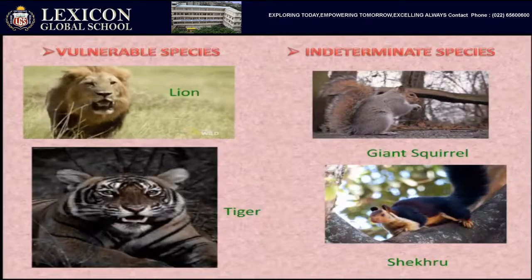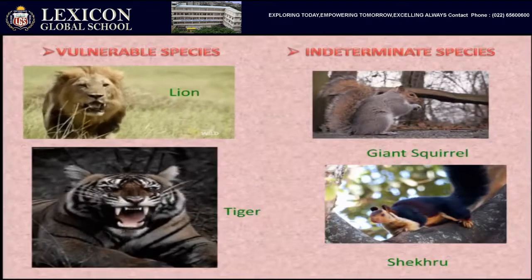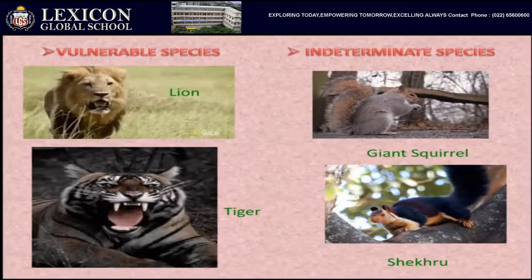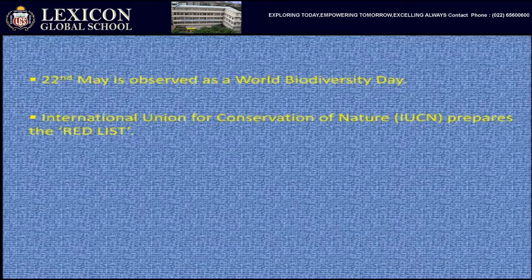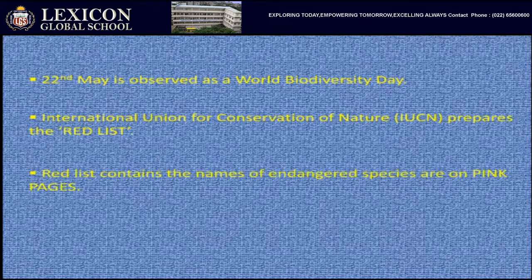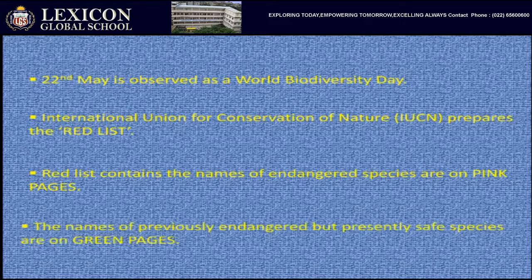22nd May is observed as World Biodiversity Day. The International Union for Conservation of Nature (IUCN) prepares the Red List, which contains the names of endangered species from different countries. The names of endangered species are on pink pages, while the names of previously endangered but presently safe species are on green pages.